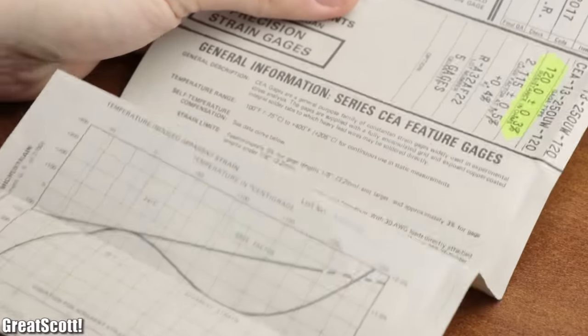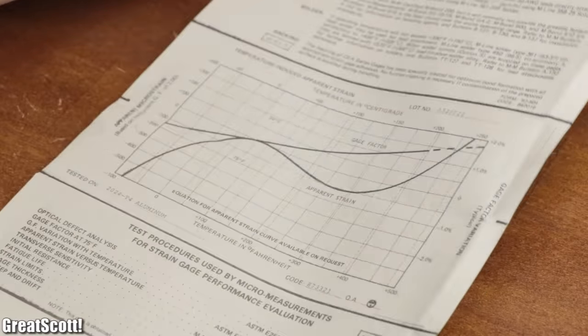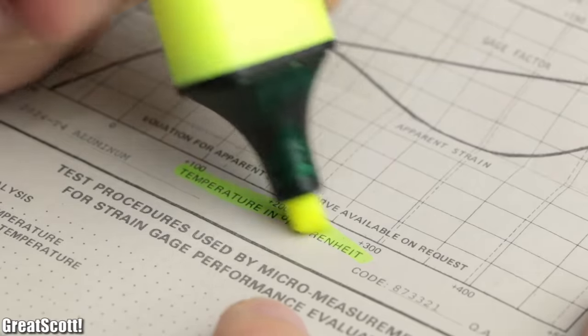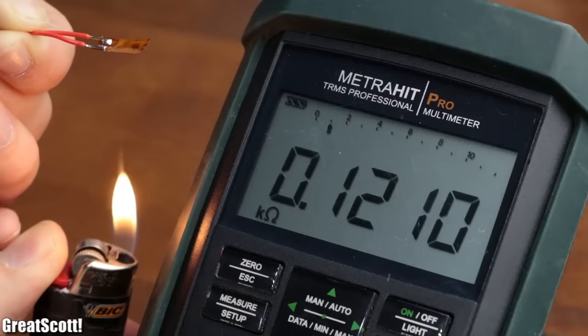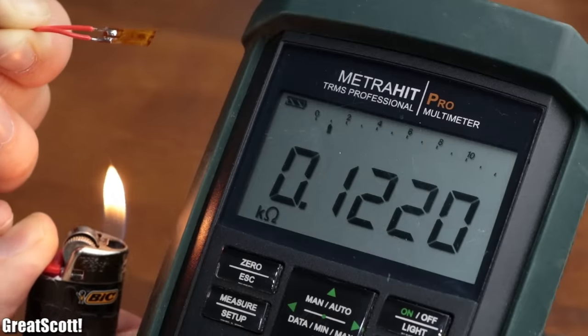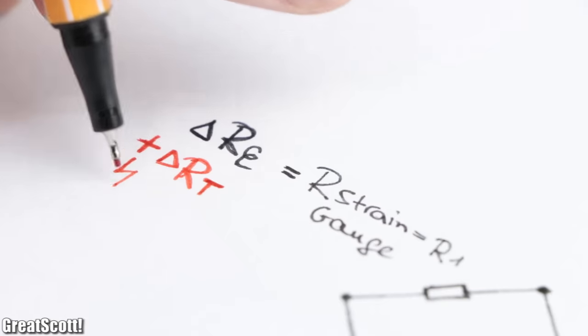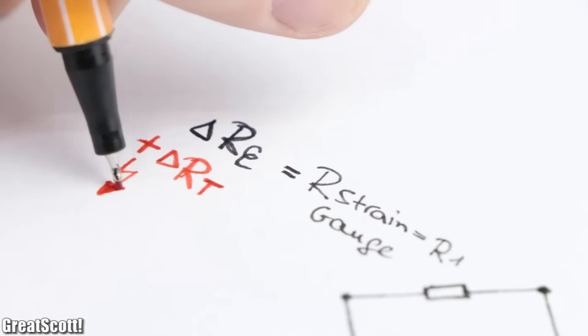But there's still a noticeable problem which comes to mind when we have a look at the datasheet. It seems like the resistance of our strain gauge is temperature sensitive, which can easily mess up the measured voltage difference of the Wheatstone bridge.